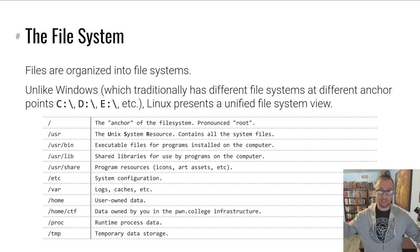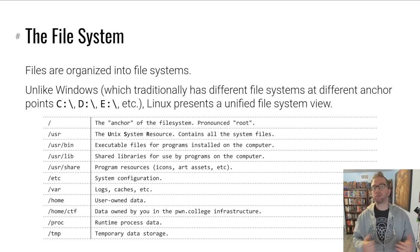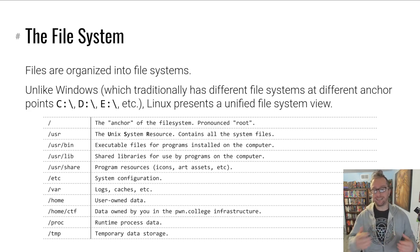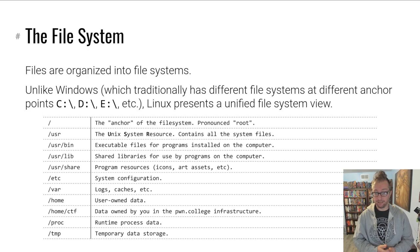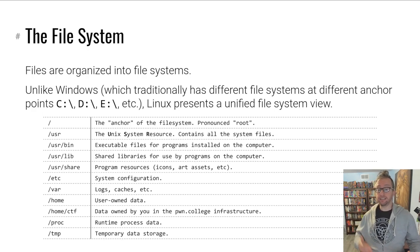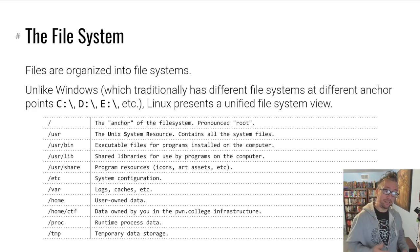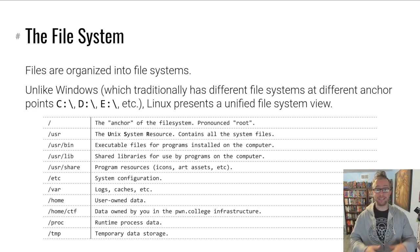There's a bunch of directories in a tree under slash. Here are some common ones. /usr — everyone pronounces it that way, but it actually stands for Unix System Resource — that's where your Unix system resources are stored, including executable files in /usr/bin (spoiler alert: that's where cat lives), libraries in /usr/lib, and shared program resources in /usr/share. /etc has your system configuration. /var has logs and caches. /home is where all your data is — specifically in the Pwn College infrastructure, /home/ctf is your persistent home directory. /proc has information about processes and system configurations.